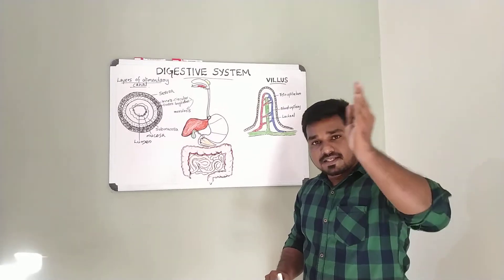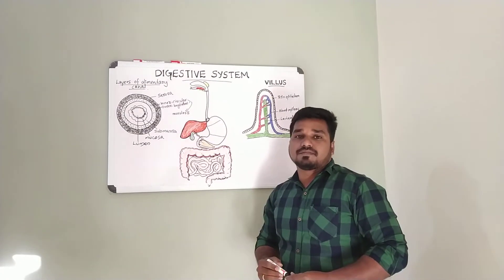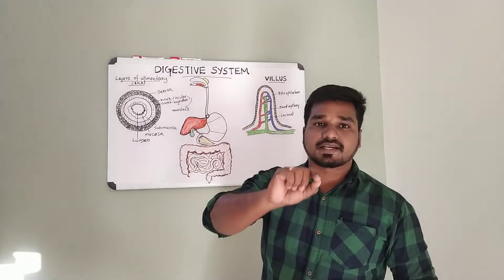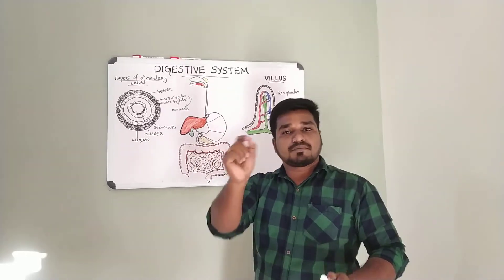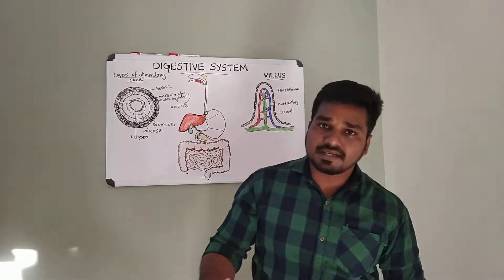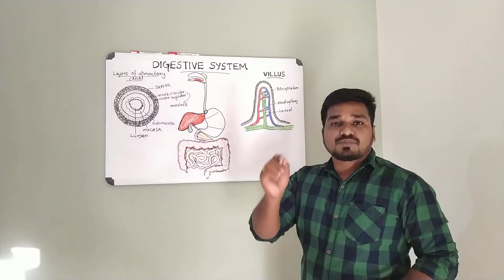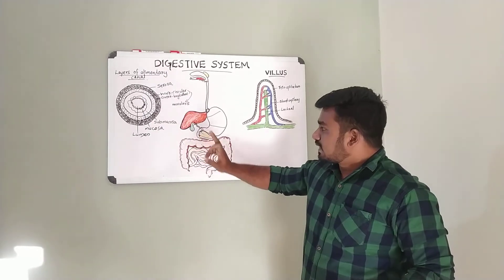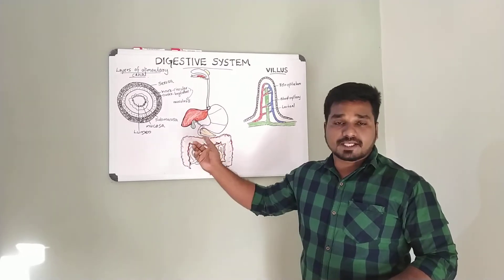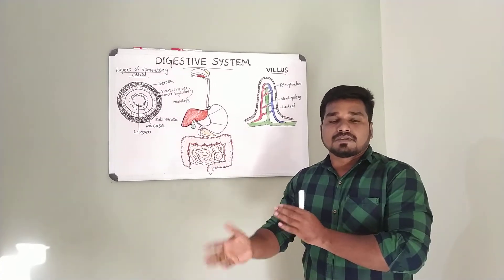Disaccharides such as sucrose, maltose, and lactose are broken down into monosaccharides. Protein digestion begins in the stomach with pepsin breaking proteins into polypeptides. In pancreatic juice, trypsin and chymotrypsin — activated from their precursors by enterokinase — further digest polypeptides into amino acids.